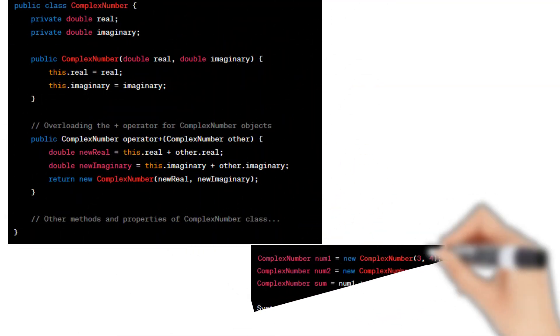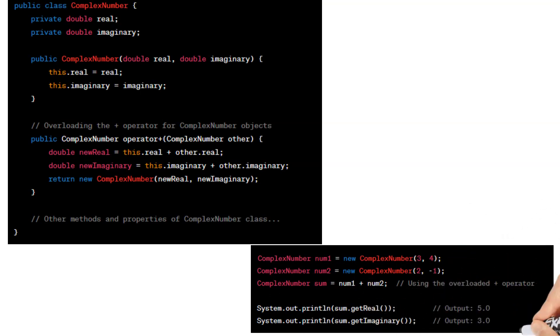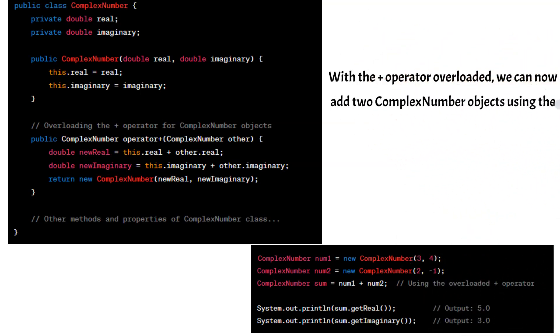In this example, we define a method operator plus that takes another complex number object as a parameter and returns a new complex number object. This method adds the real and imaginary parts of the two complex numbers and creates a new complex number with the result.